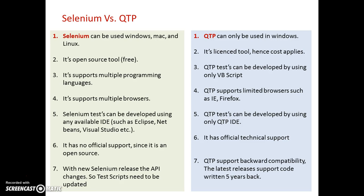With new Selenium releases, the API sometimes changes, which means your previously written code may need to be updated when migrating to a new version. Whereas QTP supports complete backward compatibility — when you take a new version of QTP, you do not need to change your test code. For example, the latest QTP release still supports code written five years back.